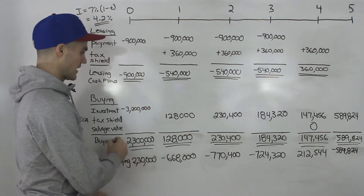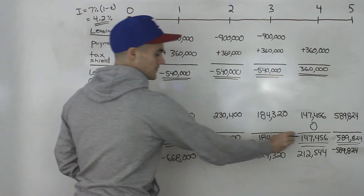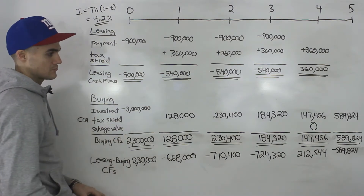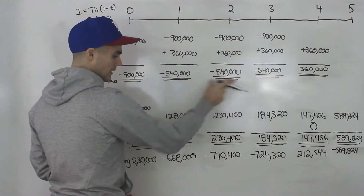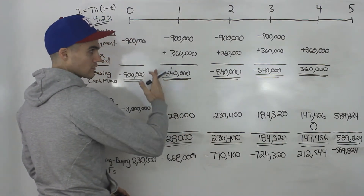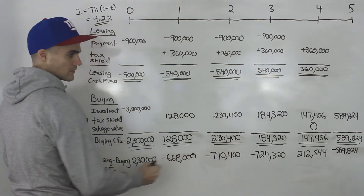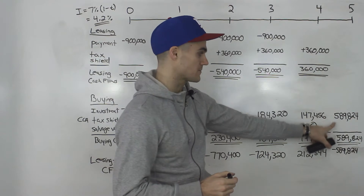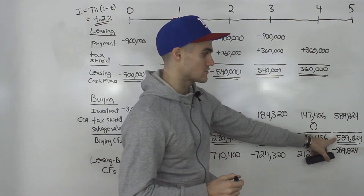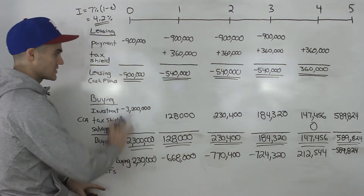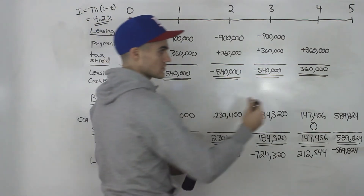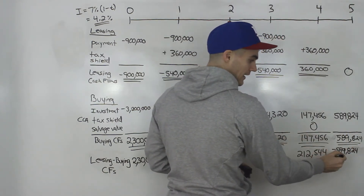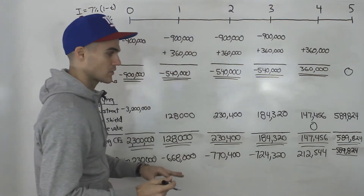When netting everything out: first compute the buying cash flows by netting all those rows. Then take leasing minus buying cash flows — same process as the previous question. Notice the last value in the incremental row is negative: in year five there's a zero for leasing cash flows, minus $589,824 for the buying cash flows, resulting in a negative incremental cash flow of $589,824.